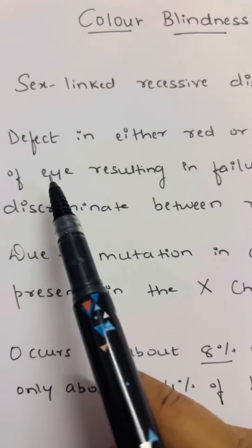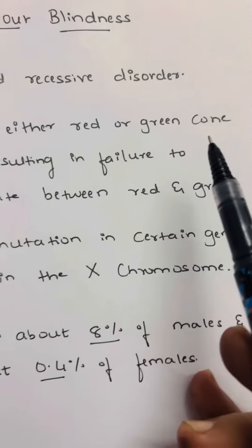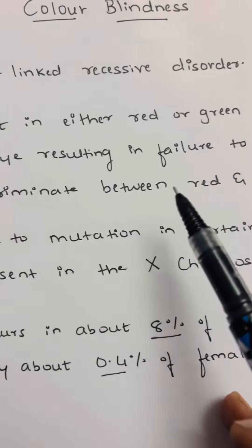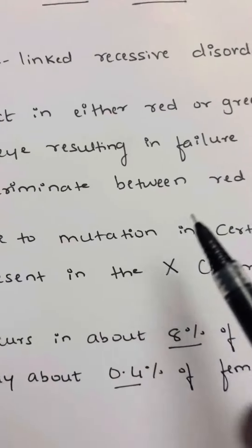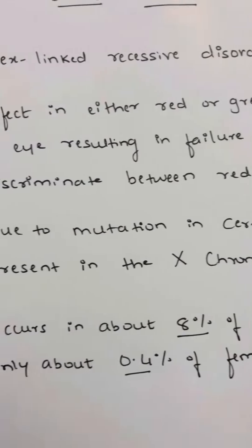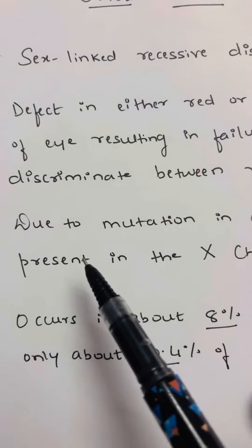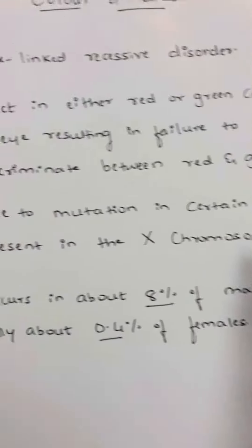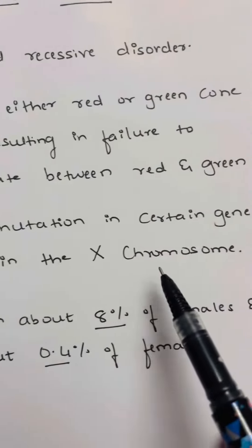Why it occurs: there is a defect in either red or green cone of the eye, resulting in failure to discriminate between red and green color. It is caused due to mutation in certain genes present in the X chromosome.